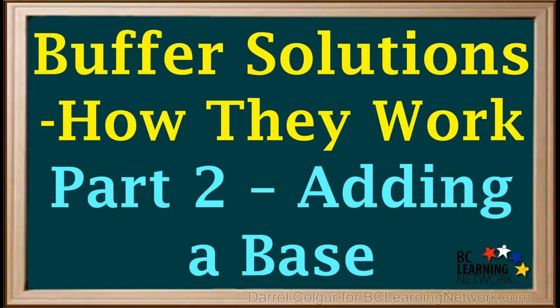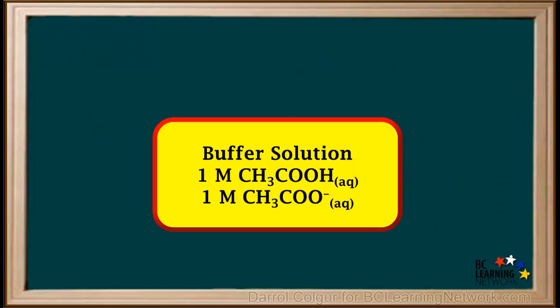We'll use equilibrium concepts to explain how a buffer solution minimizes change in pH when a small amount of base is added. We'll start off by considering a buffer solution in which the concentration of acetic acid and the concentration of the acetate ion are both 1 molar.